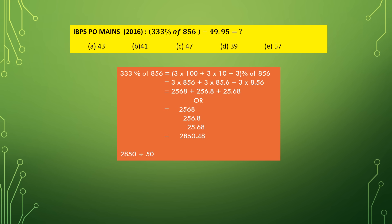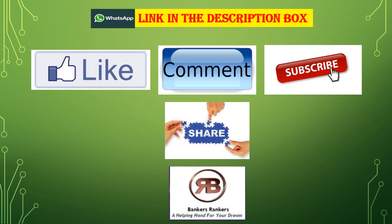So the final result is 2850.48 divided by 50, which equals 57. Please like, comment, subscribe, and share our videos. If you want to download the question paper, join our WhatsApp group — the link is given in the description box.